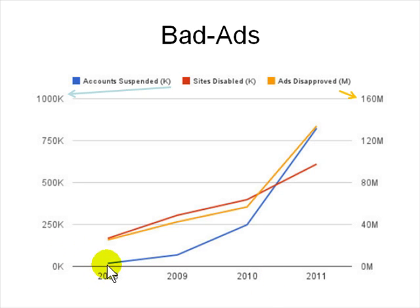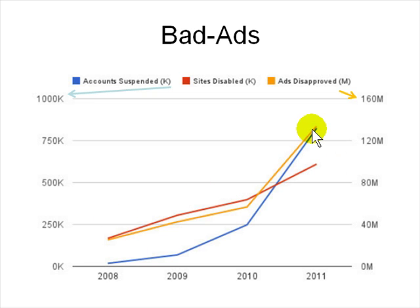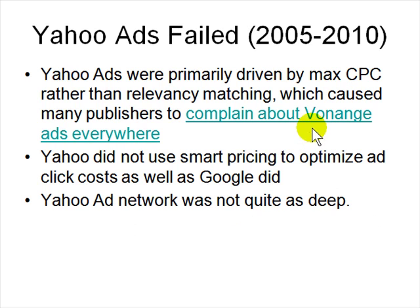Google suspends accounts when they are spamming or have bad ads. Sites get suspended when they have bad content. Ads get disapproved if they are not up to quality standards, or if they are not actually selling what they claim to sell.